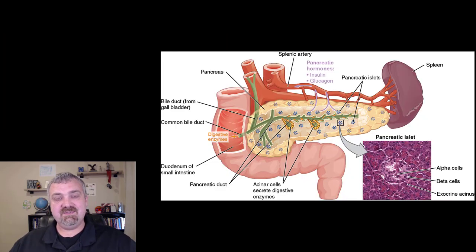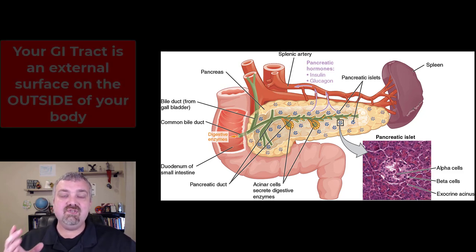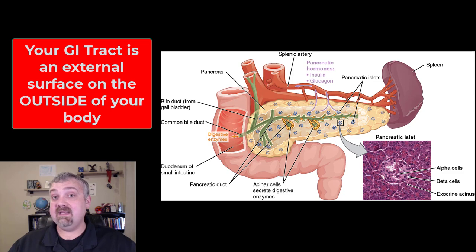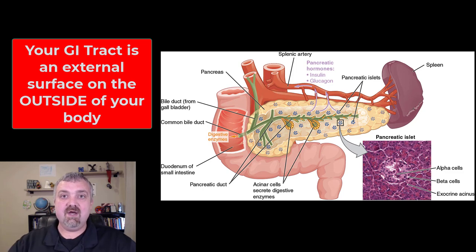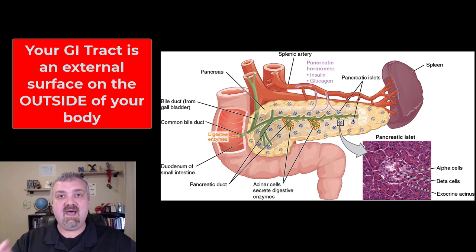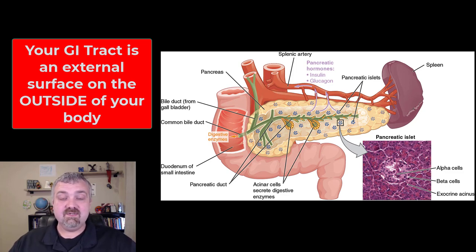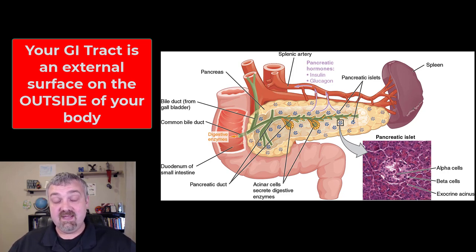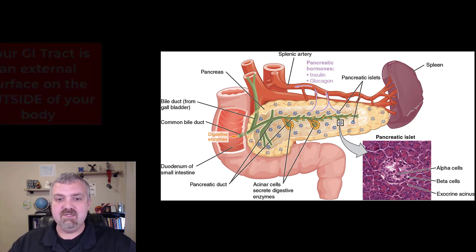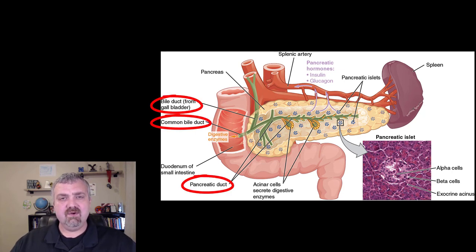To understand that intestinal glands are exocrine, remember that your GI tract is a hollow tube traveling through your body — it's actually not inside of you. Like if you were going through a tunnel through a mountain, you're not in the mountain, you're a tube traveling through it. So the contents inside your GI tract, like fecal material prior to defecation, are outside your body. All of your digestive glands are exocrine — they dump secretions onto a surface, which is the lining of the intestine. You can see the ducts that grab those secretions and dump them into the duodenum.